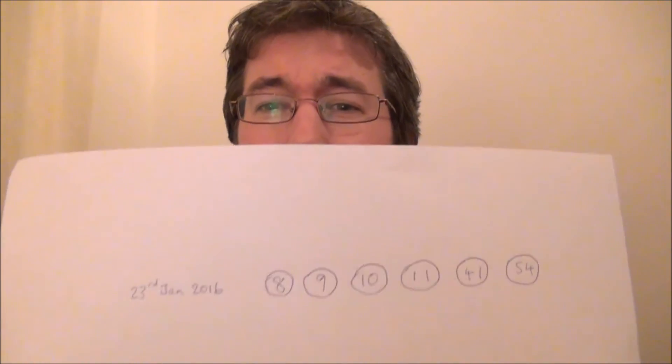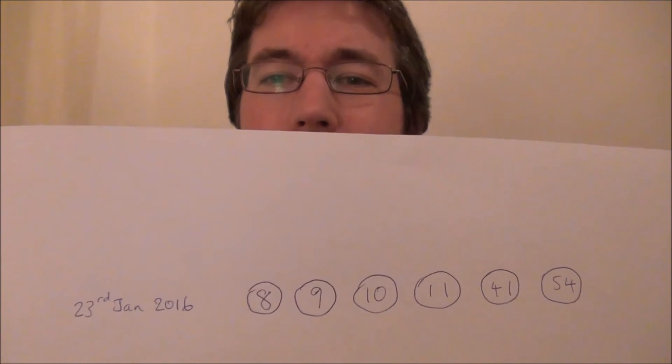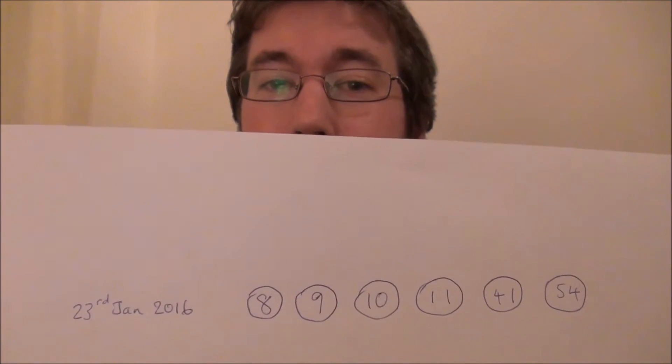Hello. Today is the 23rd of January, 2016, and the UK's lottery numbers tonight look somewhat unusual. In fact, here they are. So, they are 8, 9, 10, 11, 41 and 54.